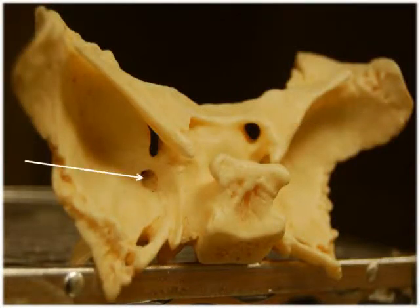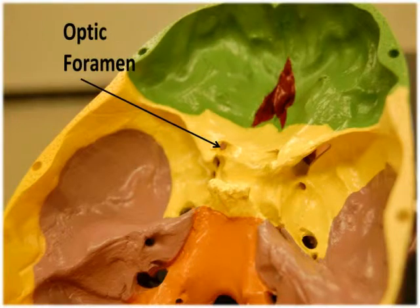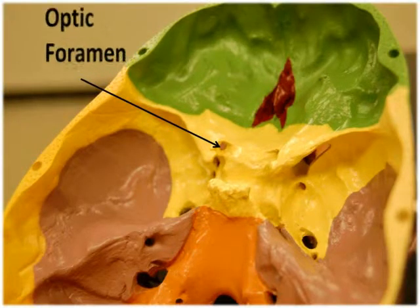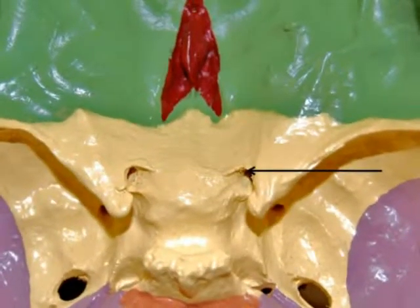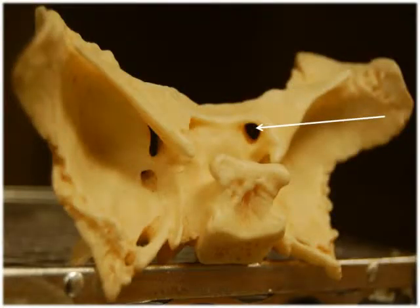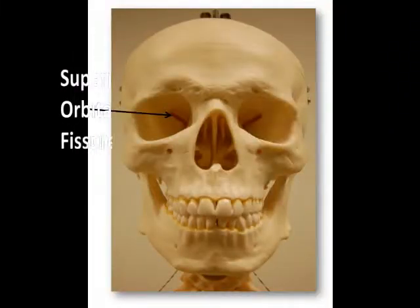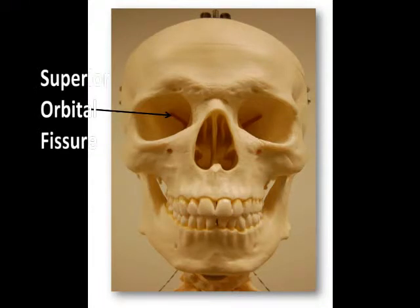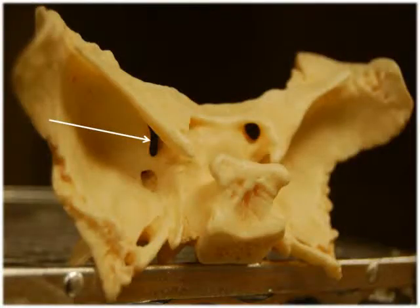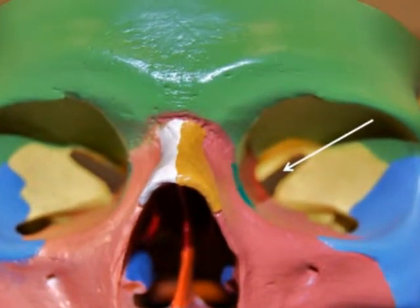The sphenoid bone is home to many foramina. The optic foramen, also known as the optic canal, is located anteriorly on the sphenoid bone between the body and lesser wings, just in front of the sella turcica. It allows the optic nerve, which is cranial nerve 2, and the ophthalmic artery to pass into the orbit. The other opening located nearby is the superior orbital fissure — a triangular slit between the greater and lesser wings — which allows passage of some cranial nerves as well as blood vessels.